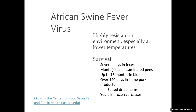The virus is also resistant in the environment, especially at lower temperatures. It can survive for a period of time in carcasses like wild boar carcasses. In Europe and Russia, there's been spread in wild boar. It can survive several days in feces and contaminated pens, up to 18 months in blood and in pork products. That's one risk factor for introduction — ham or other pork products brought in from affected countries, or spread from the Dominican Republic and Haiti over to Puerto Rico.